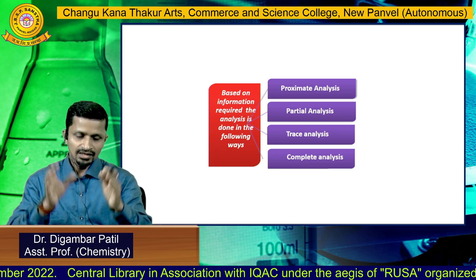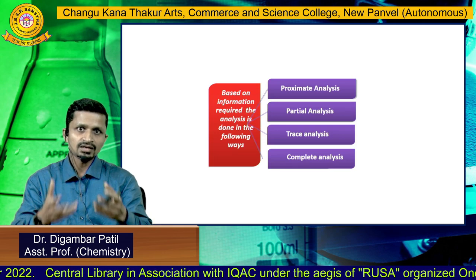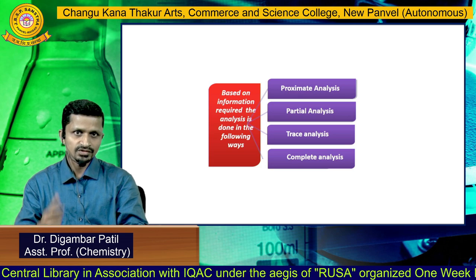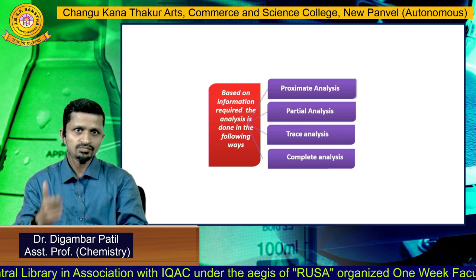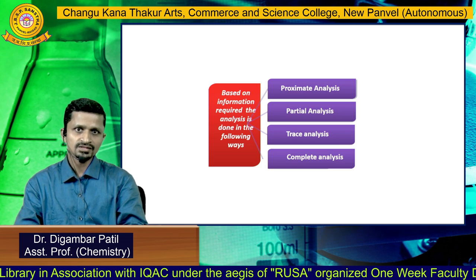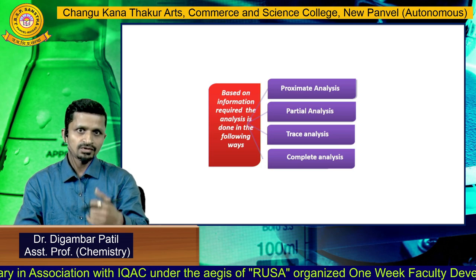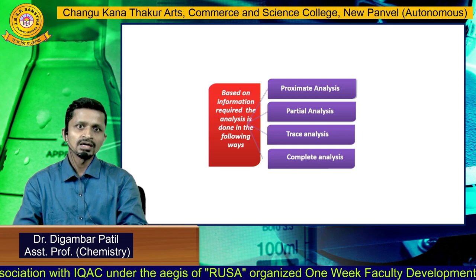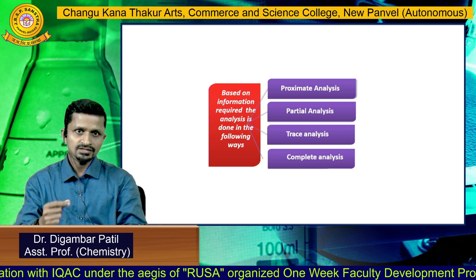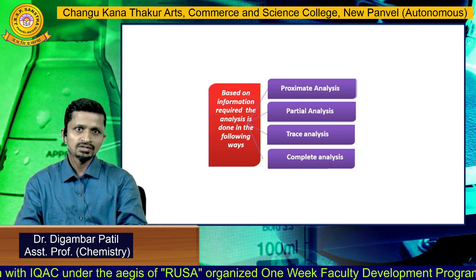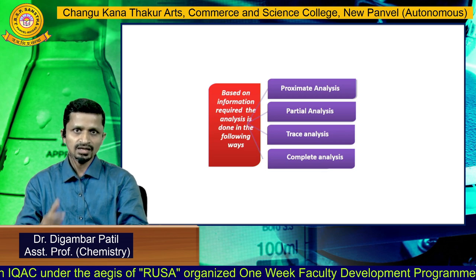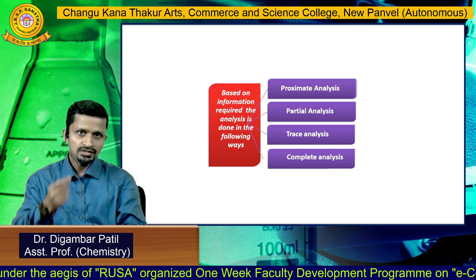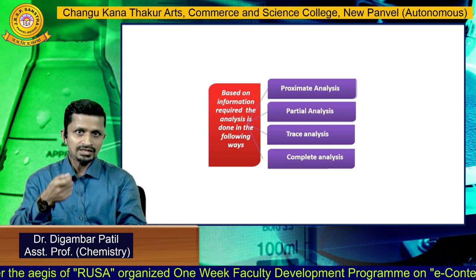Based on the nature of information required, analysis is again classified into four types: first, proximate analysis; second, partial analysis; third, trace analysis; and fourth, complete analysis. We will now learn each type of analysis in detail.